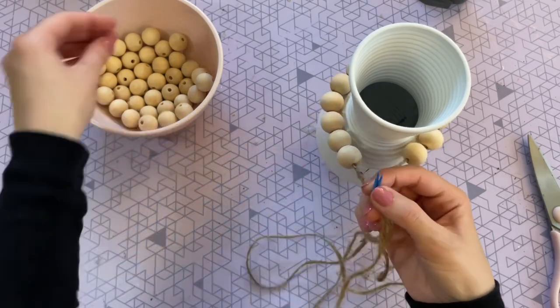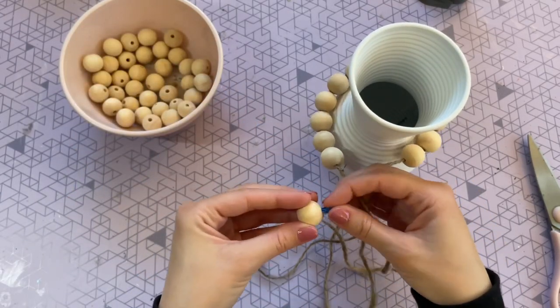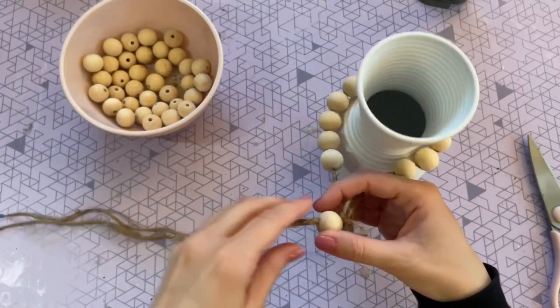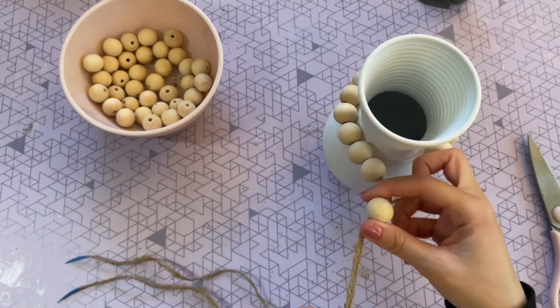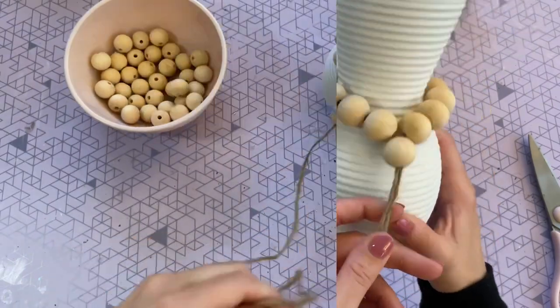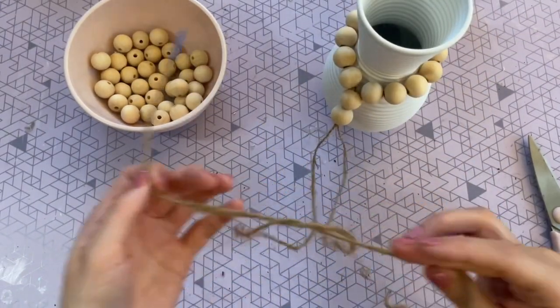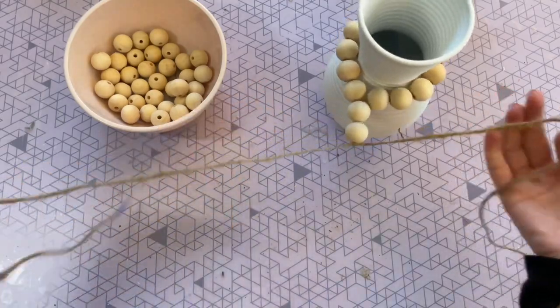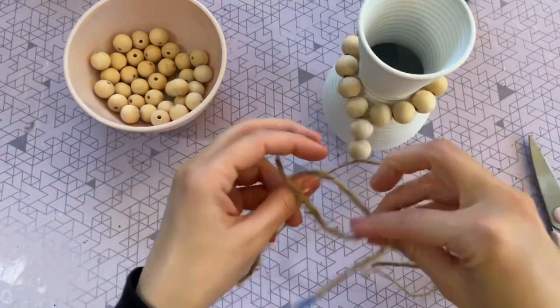And now I'm actually going to take both of my strands and put them through one bead. So this is going to kind of just bind everything together. And this is an easy trick to really elevate any vase you have. And I'm actually just going to add one more of those beads. And then I'm going to tie my twine into a knot to make sure that everything stays in place.